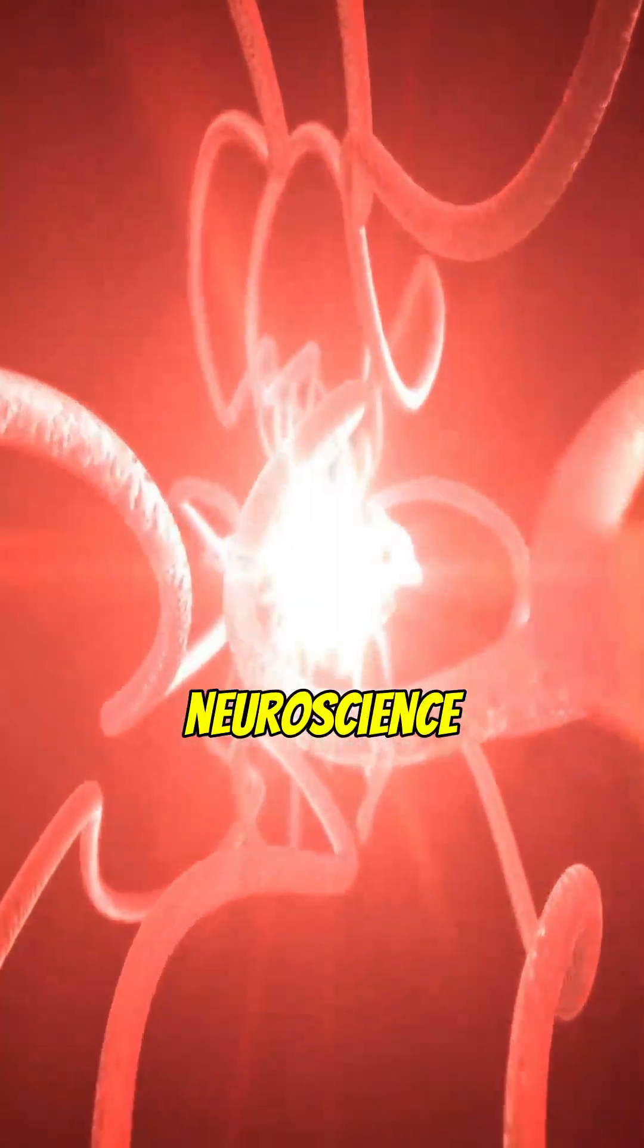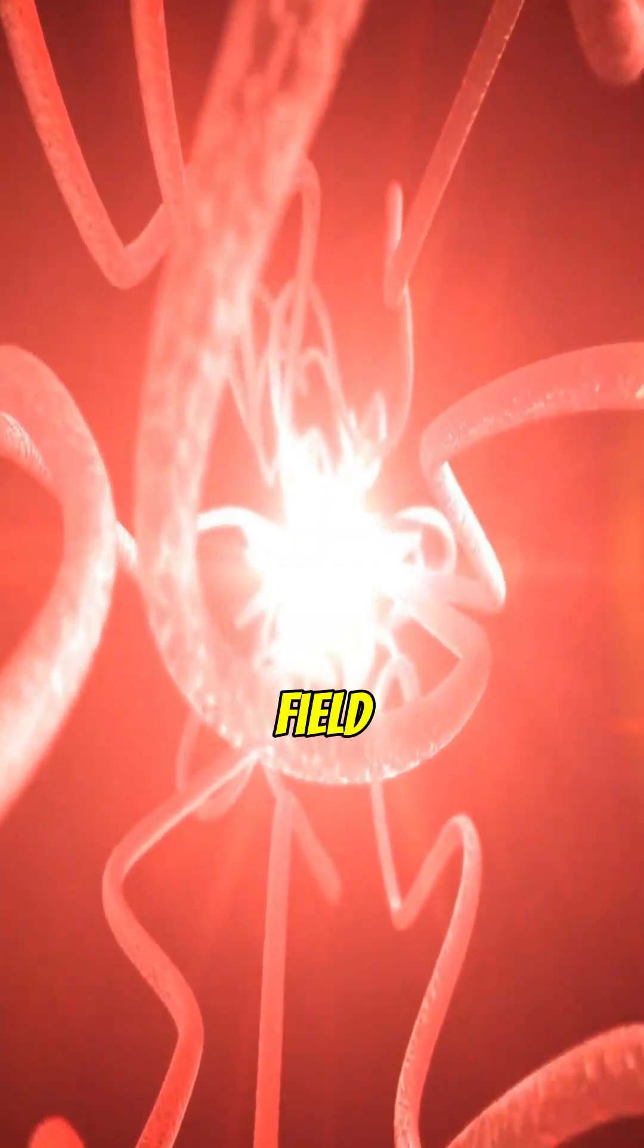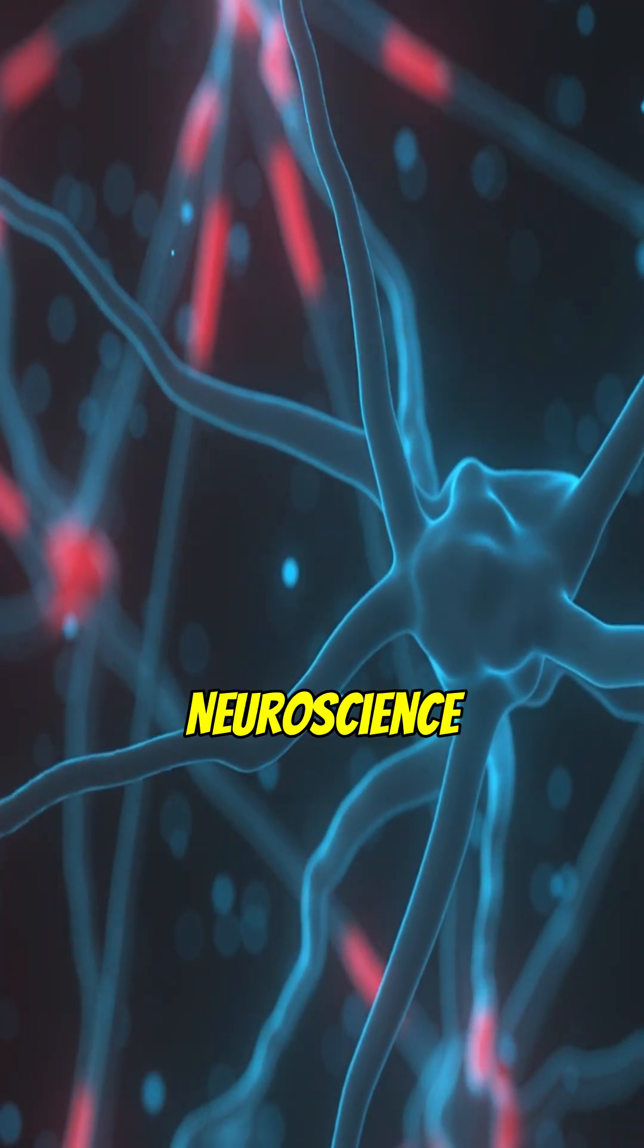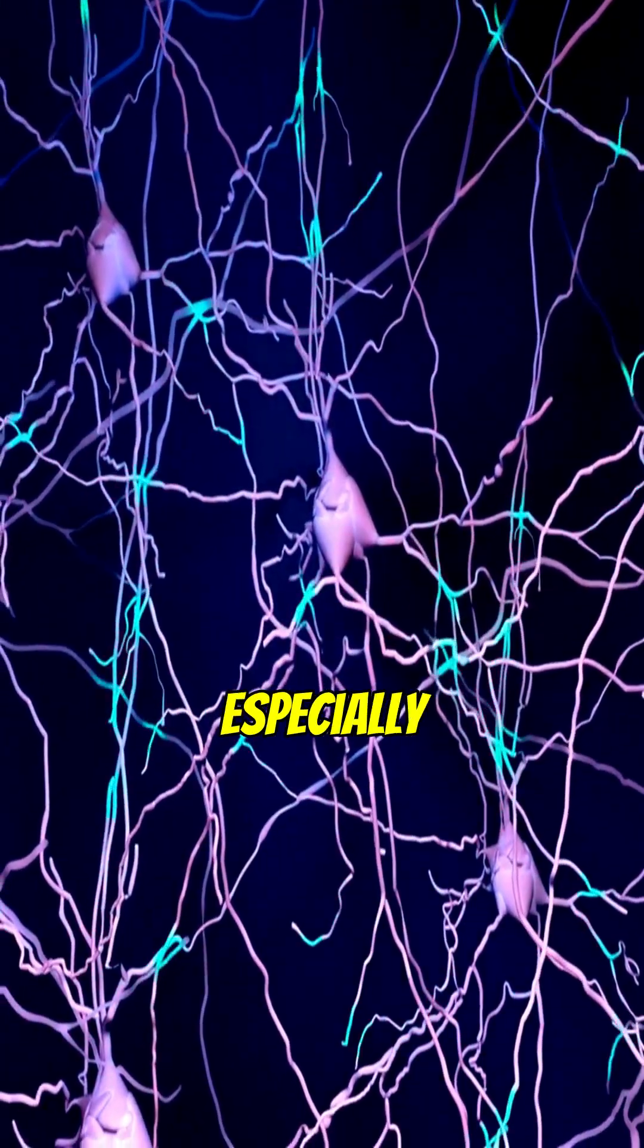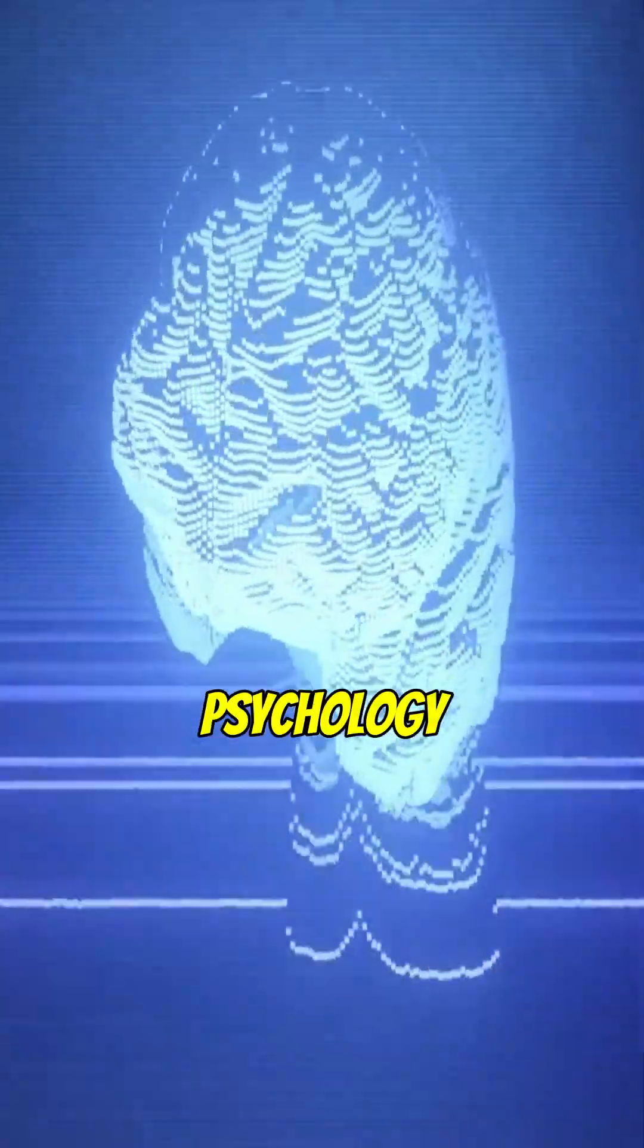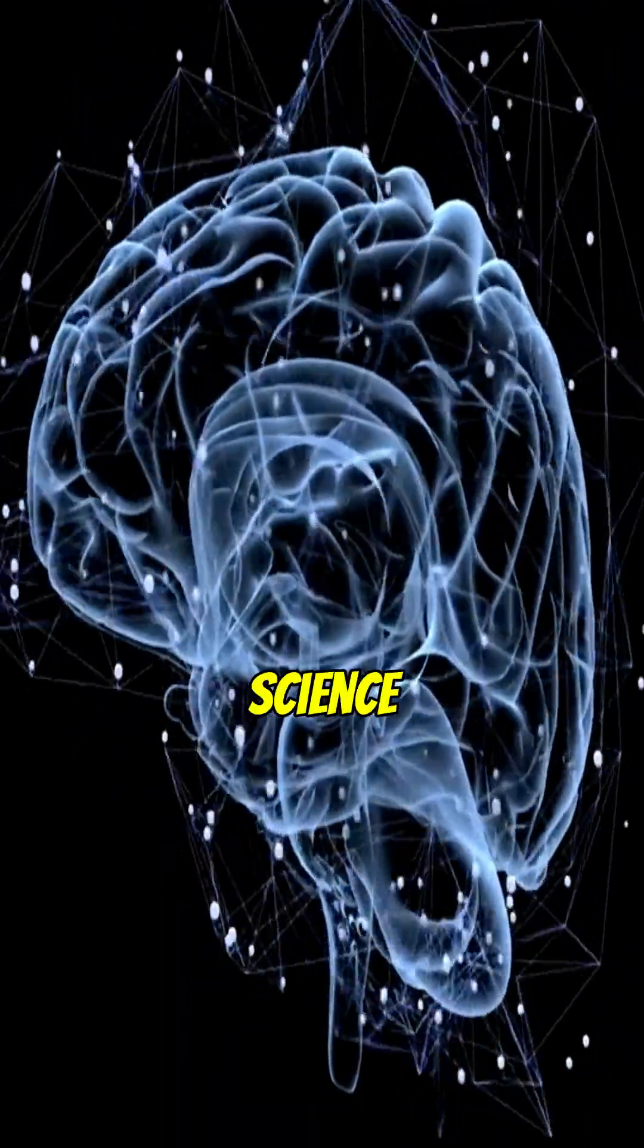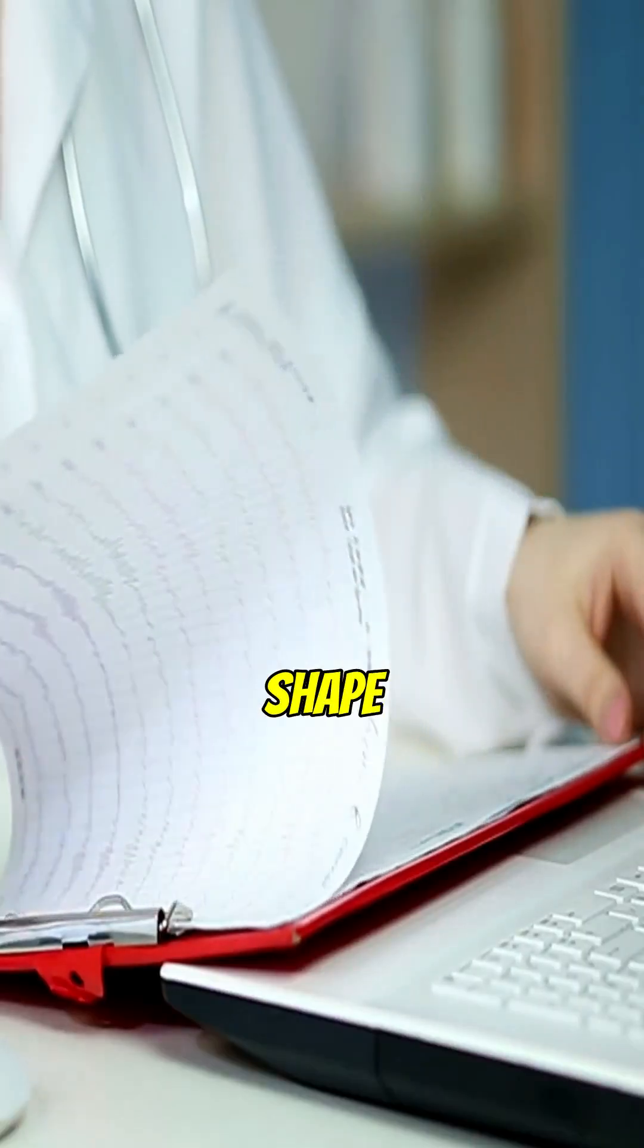This is where neuroscience and psychology begins, a field that asks, what is the brain doing when you become you? Neuroscience is the study of the nervous system, especially the brain. Psychology is the study of the mind and behavior. When the two meet, they form neuroscience psychology, the science of how brain structure and function shape human behavior.